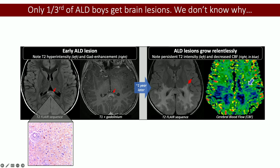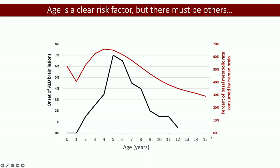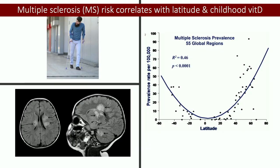These lesions, if left untreated — this is not the same patient, just to be clear — perhaps a year or two might pass and the lesion continues to grow. We do see some other features including decreased blood flow. The clearest risk factor we have so far is age. Between the ages of four and eight is the peak risk, as shown in Dr. Malik's dataset — this black line represents the relative percent of kids who might develop cerebral ALD at any given age.